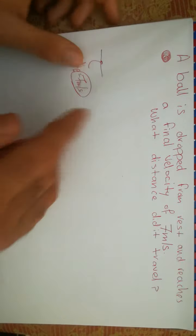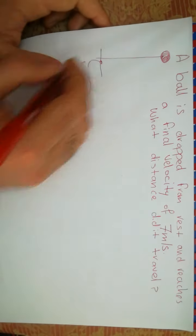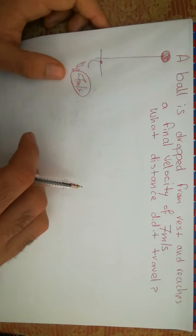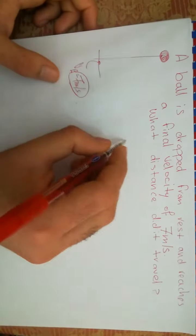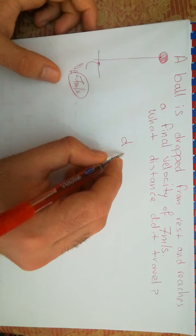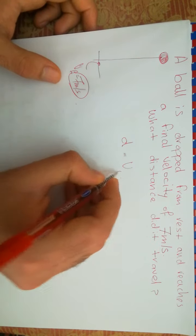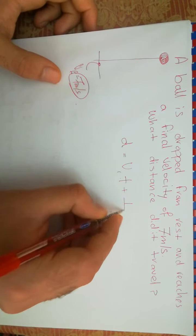We need to find this distance right over here. How are we going to do that? Well, we know that the distance, we have a law that says the second law of motion: d is equal to v_i*t plus half a*t squared.